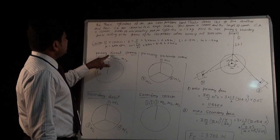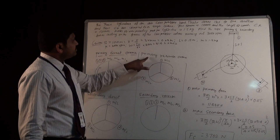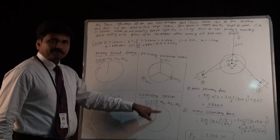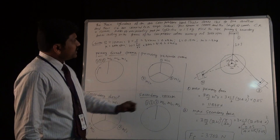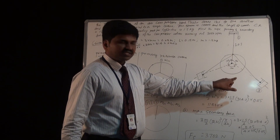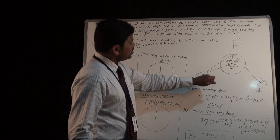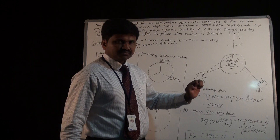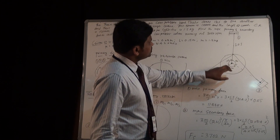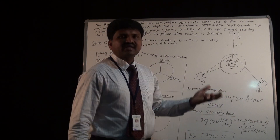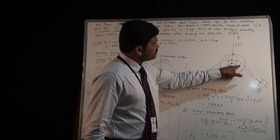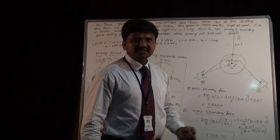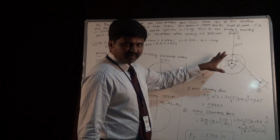Now let us draw the primary direct crank positions, primary reverse crank positions, secondary direct crank positions, and secondary reverse crank positions. This sketch is given, but even if it is not given, we have to construct it. This diagram need not be to scale — you have to show the 120-120-120 angles exactly, but the lengths need not be to scale.